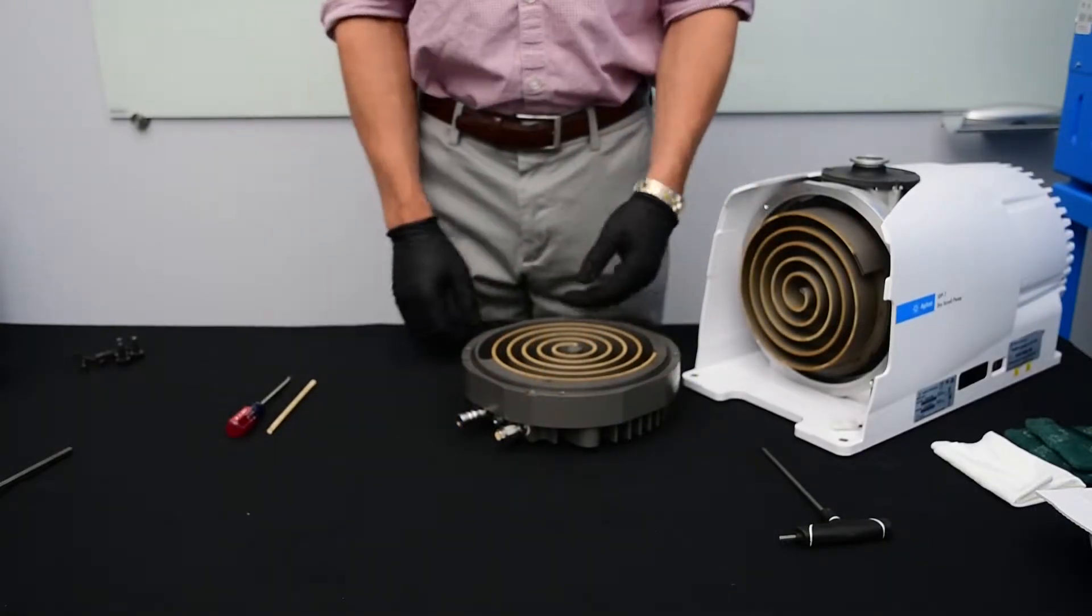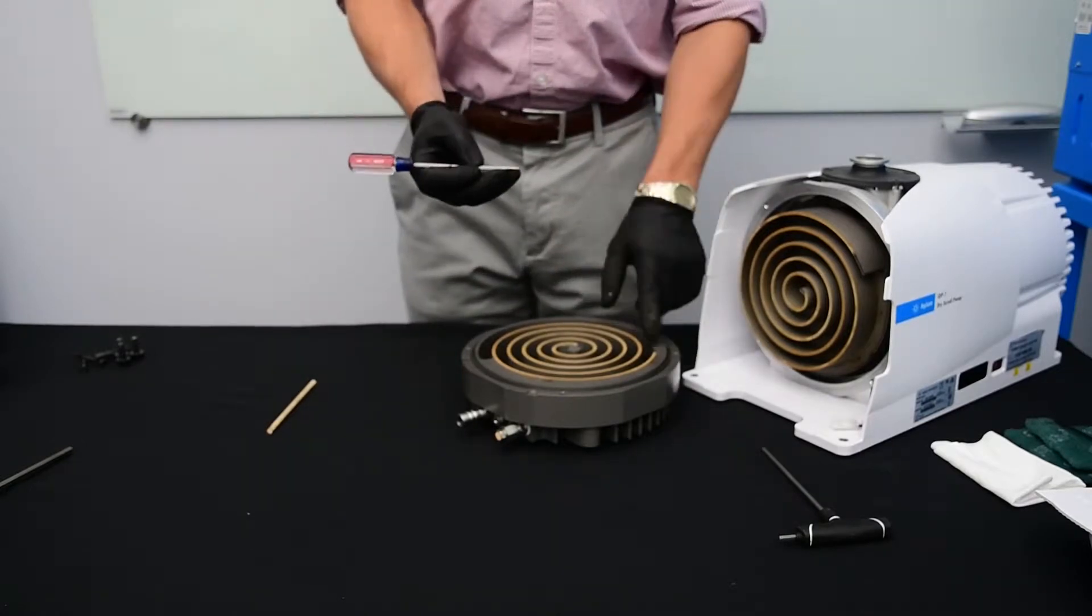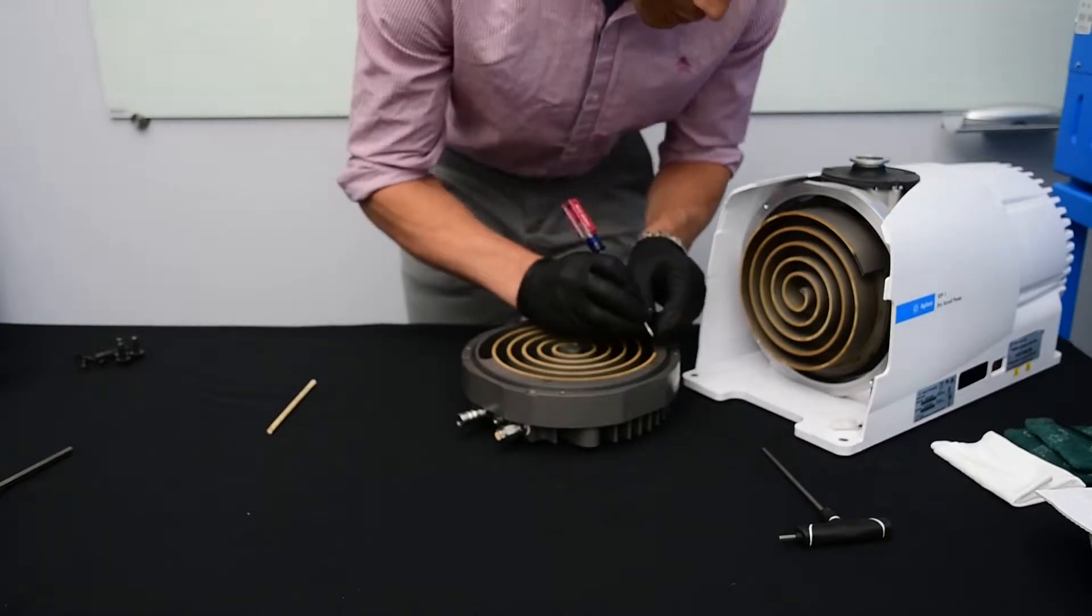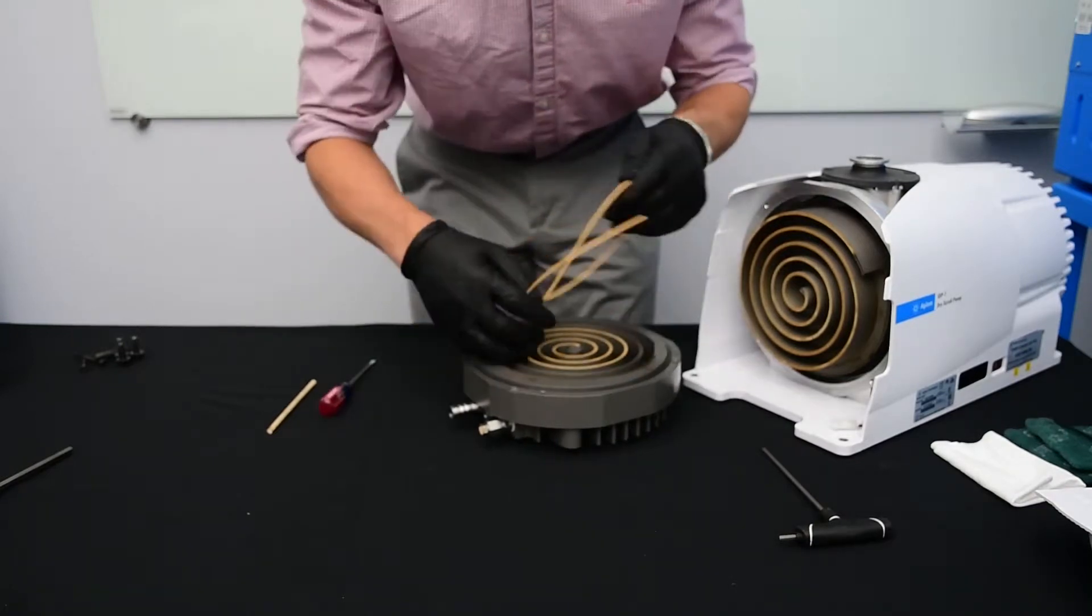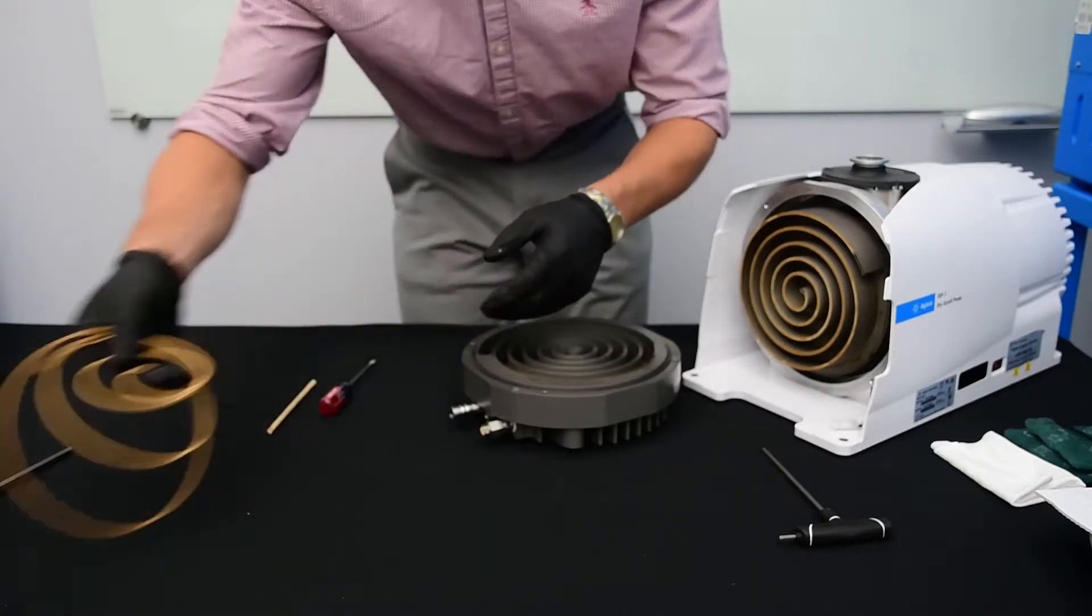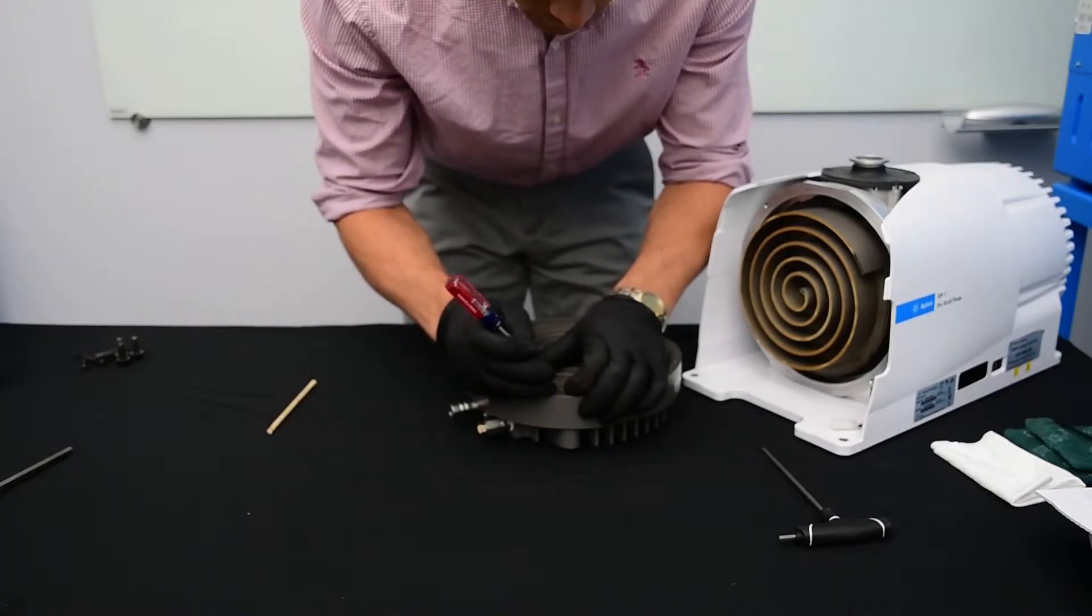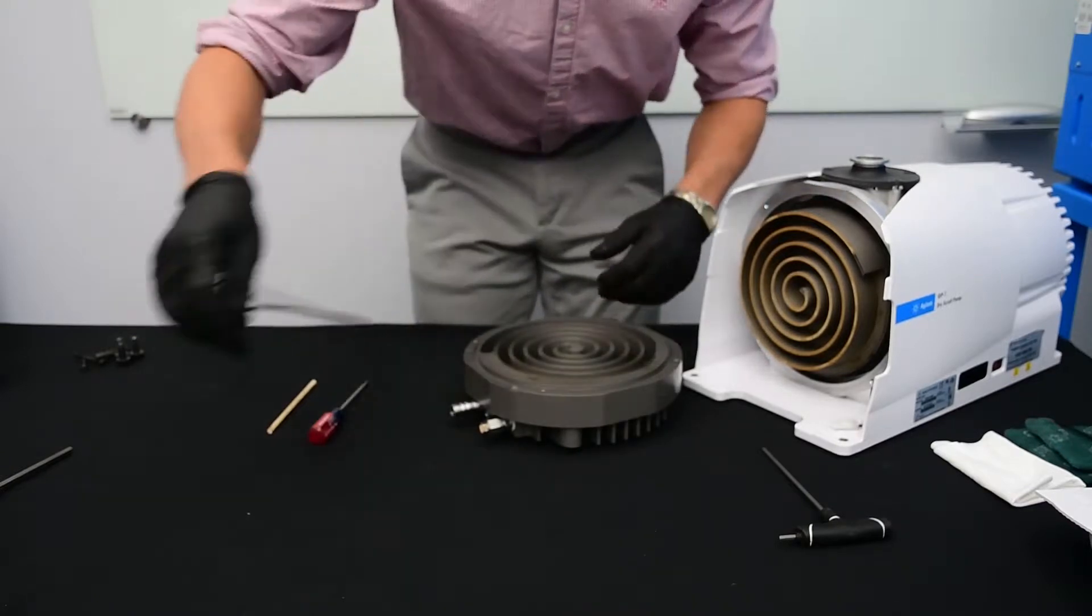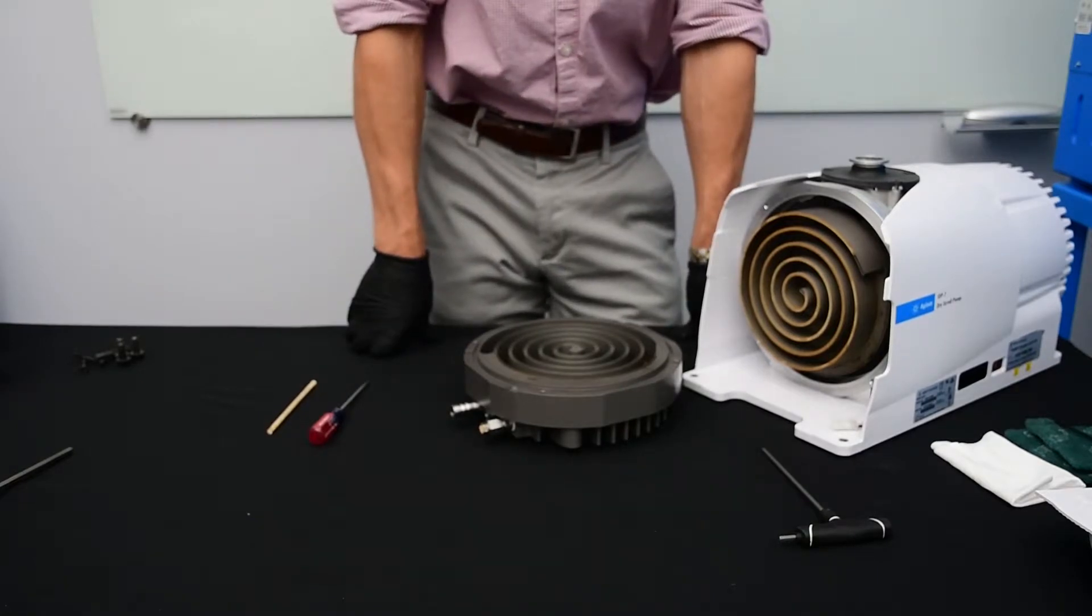Now we're going to go ahead and remove the tip seal and O-ring. I'm going to use a small screwdriver but being very careful not to scratch this anodized surface. Now discard both the tip seal and the O-ring as you'll replace both with the new tip seal kit.